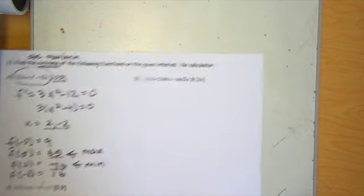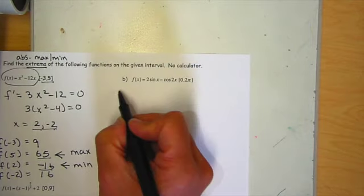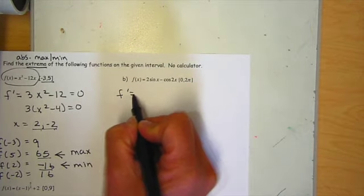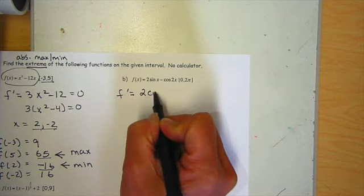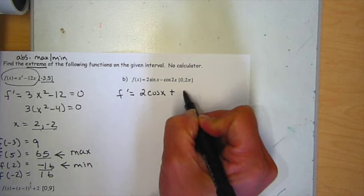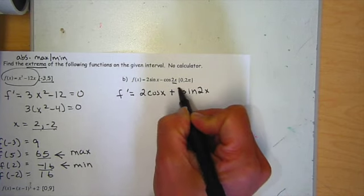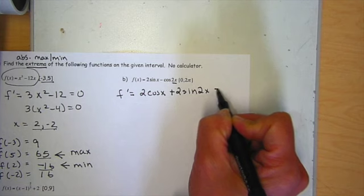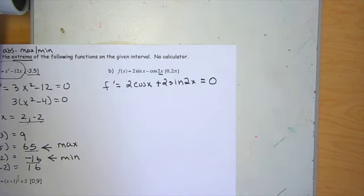Okay, let's look at the next one. This is a trig one. So same thing. We're going to start with our derivative. The derivative of the 2 sine is 2 cosine of x. The derivative of the negative cosine gives me a positive sine of 2x. Don't forget, chain around the angles, so I need a 2 there as well. I'm going to set this equal to 0 to find my critical numbers.